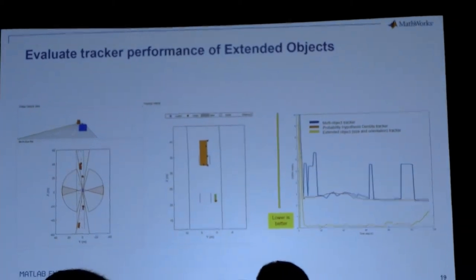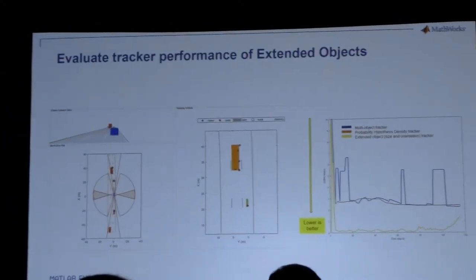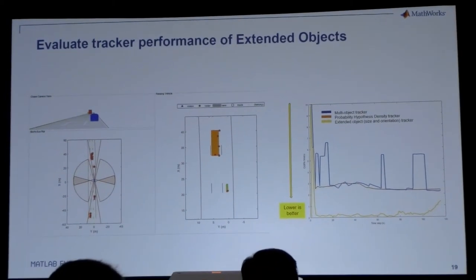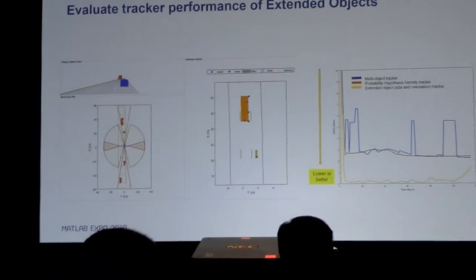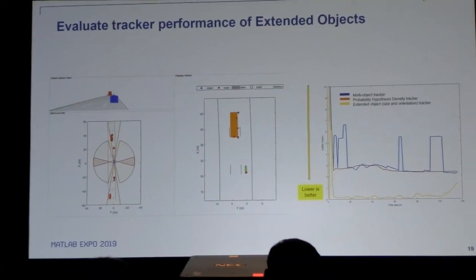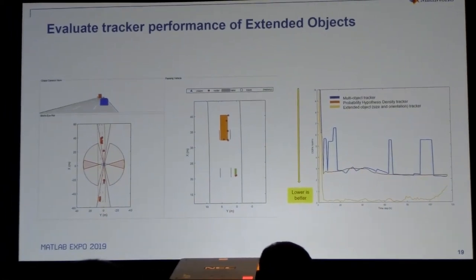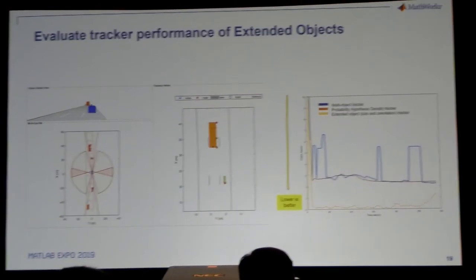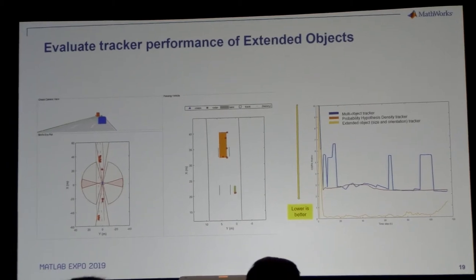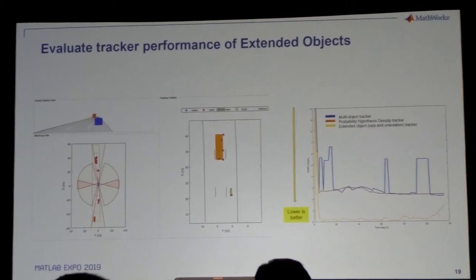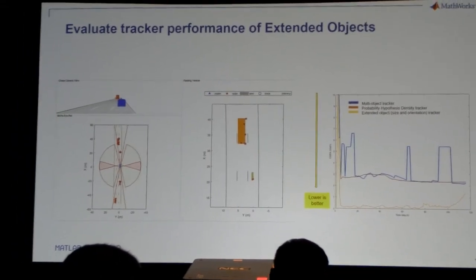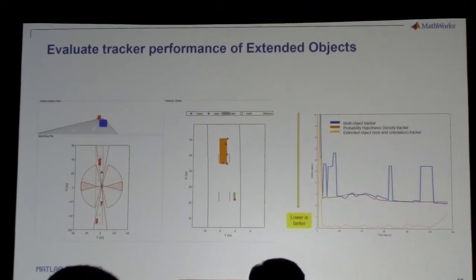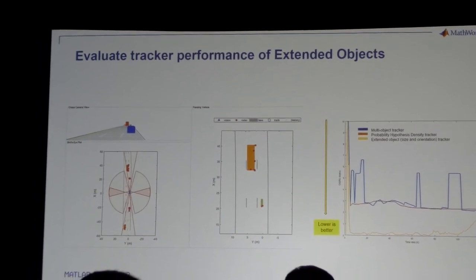When we're done, we can compare the different tracking options and get an answer — in this case, lower is better. We have different options with different computational costs. What's the system I'm implementing on? Does it give the right answer? You can have that trade space to figure out what compute power you need to implement this, and have those system trade-offs in addition to algorithm development and system-level design.